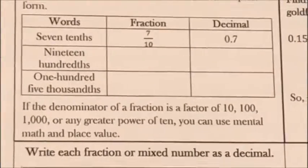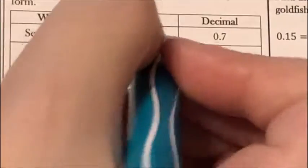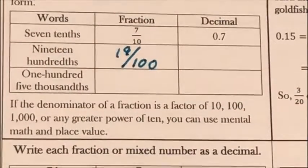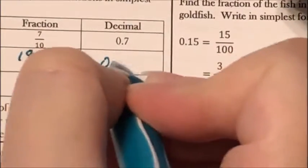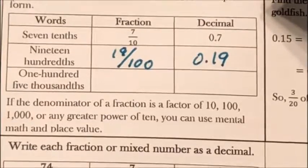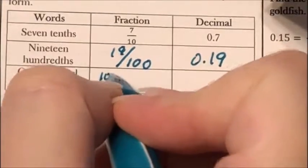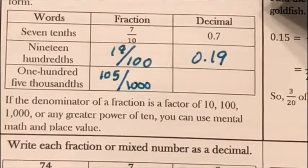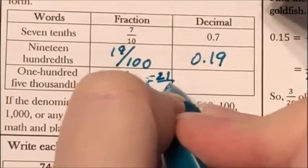Then I have 19 hundredths. Notice the '-ths' at the end means this is going to be less than 1. So 19 is my numerator and hundredths means 100, giving 19 over 100, which I write as the decimal 0.19. Then I have 105 over 1,000. This is not in simplest form because I can divide both 105 and 1,000 by 5, which gives me 21 over 500.